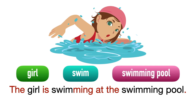Apa konklusinya? Adik-adik kena tahu bahawa tidak semua PAP menggunakan O iaitu objek. Kadang-kadang kita menggunakan People, Action, Place sahaja. Tidak semestinya semua sentence ada objek — kadang-kadang ada sentence yang tidak memerlukan objek.